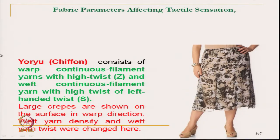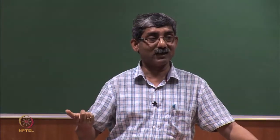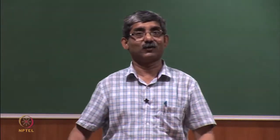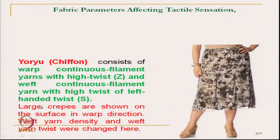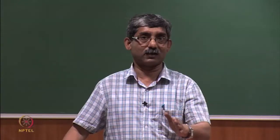Chiffon consists of high-twisted yarn like georgette, but the difference is that the warp yarn is Z-twisted and the weft yarn is S-twisted. Due to this twist direction difference, it gives a large crepe structure at the surface in the warp direction. Weft yarn density and weft yarn twist are also changed here. These are the different fabric types that have been studied.